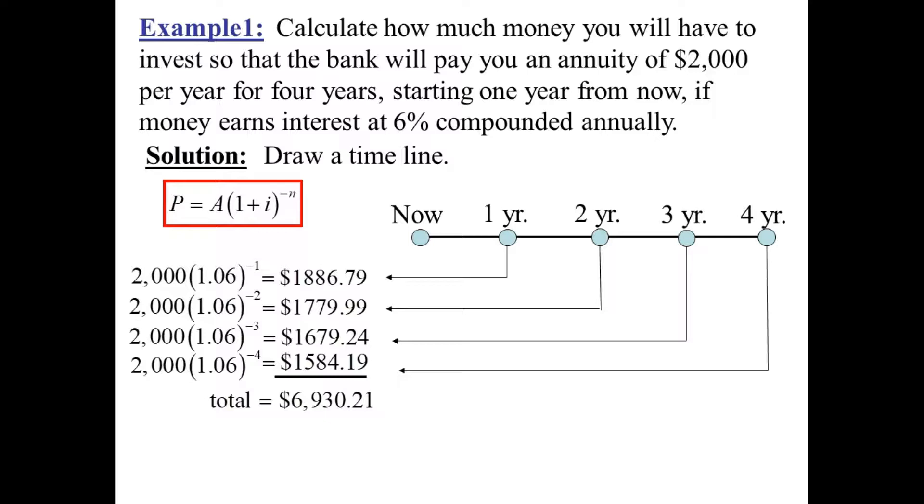You'll notice it's quite a bit less than $8,000. And the reason is because you have to wait. You have to wait over time to get this money. So the present value of the four payments is $6,930.21.